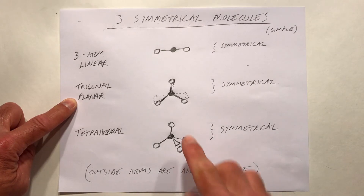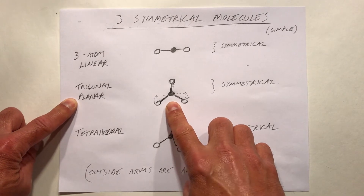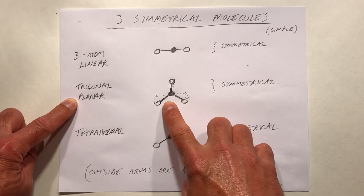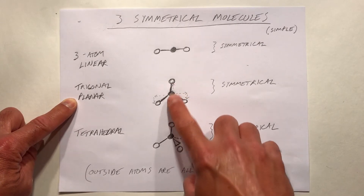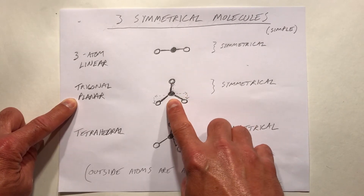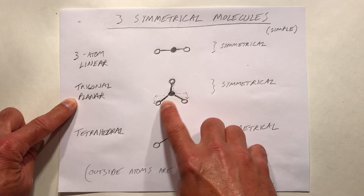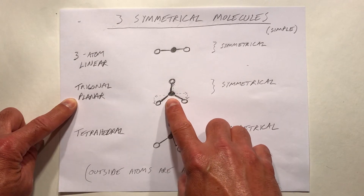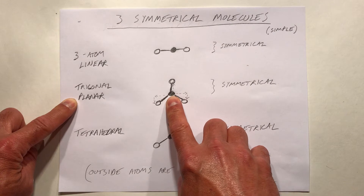One way to understand this is to imagine a tug of war where three ropes are all attached in the center, and three people are each pulling on a rope with equal force. The center of the ropes wouldn't move.